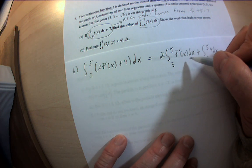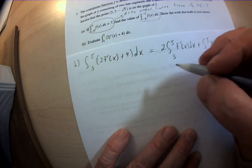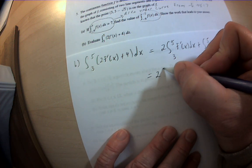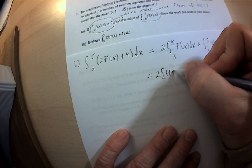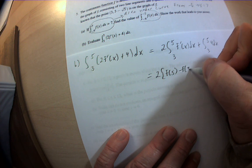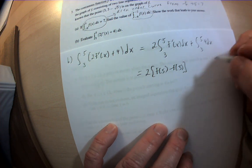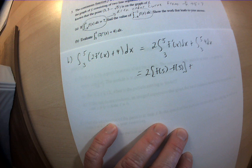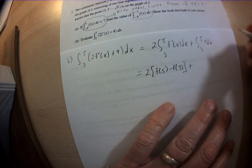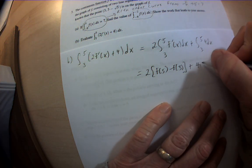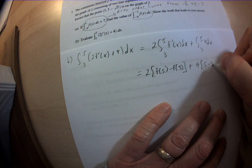Fundamental theorem of calculus: the integral of the derivative is the function. So that's going to be 2 times [f(5) minus f(3)], plus 4 times (5 minus 3).